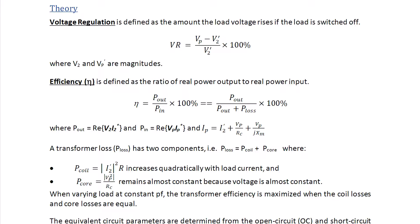A transformer's loss has two components: the power loss in the coil plus the power loss in the core. The power loss in the coil is I2 prime squared times R, which increases quadratically with load current, and the power loss in the core is Vp squared over RC, which remains almost constant because voltage is almost constant. When varying the load at a constant power factor, the transformer efficiency is maximized when the coil losses and core losses are equal.